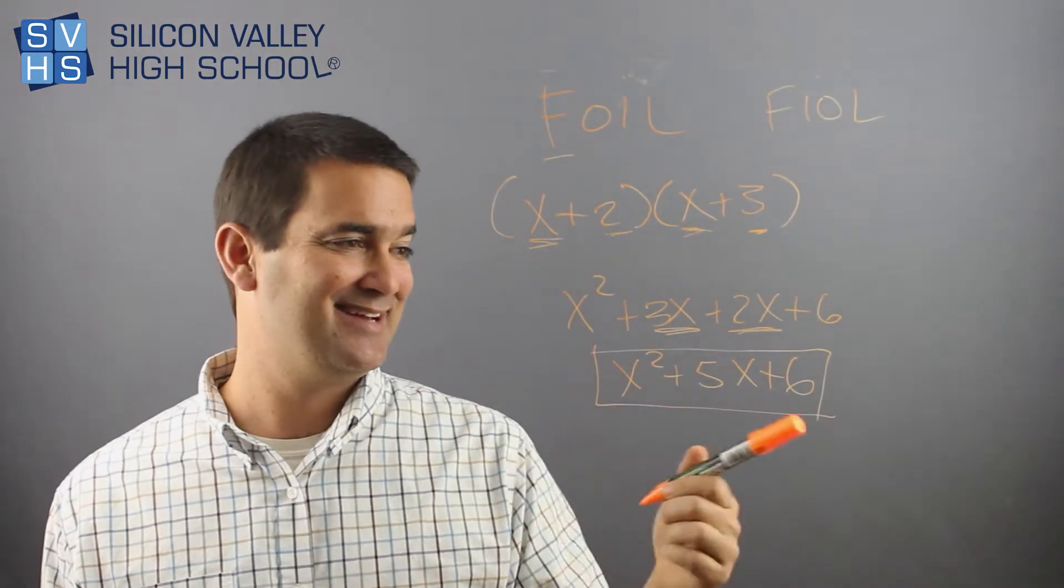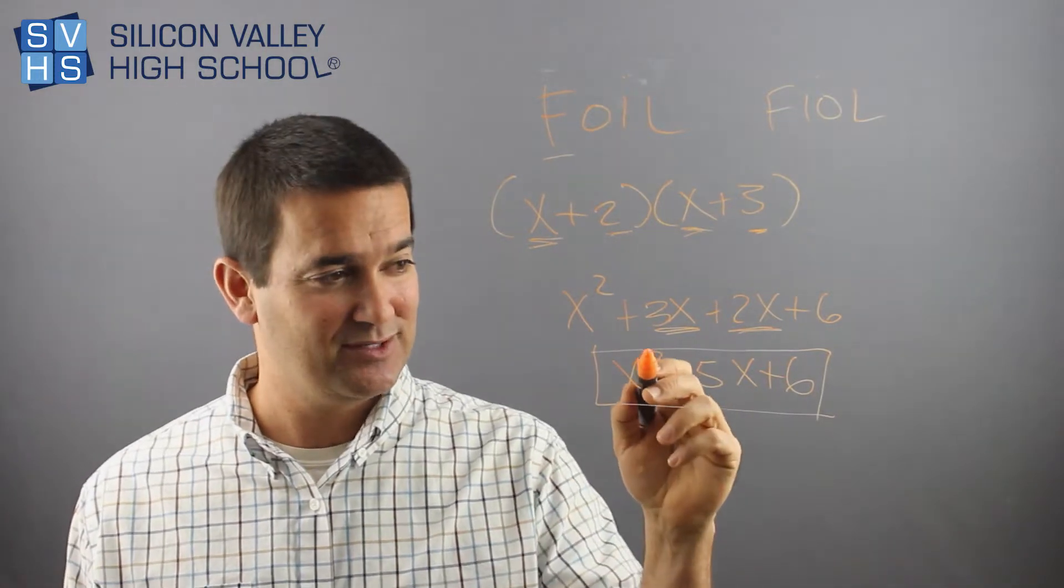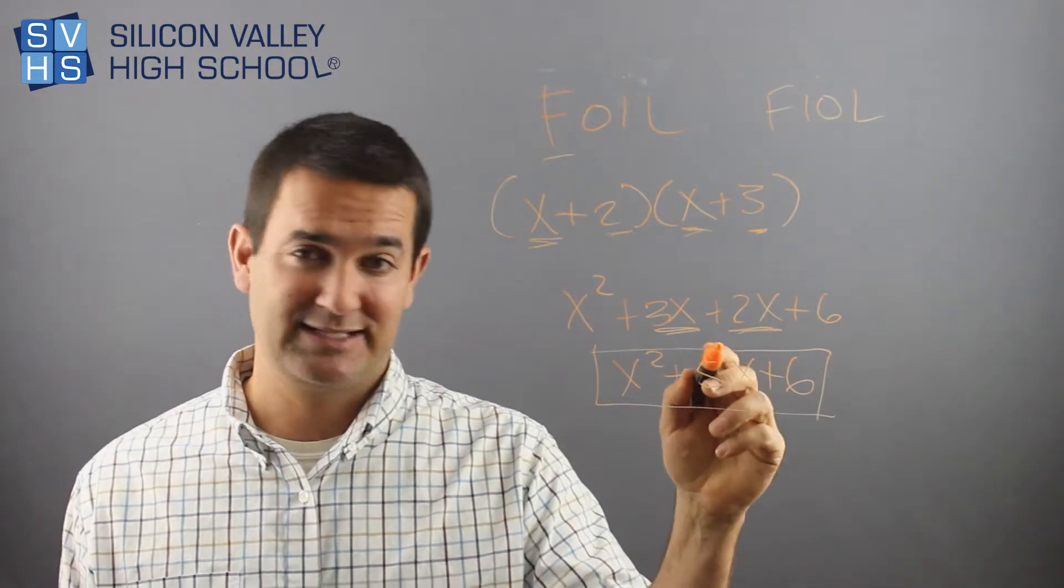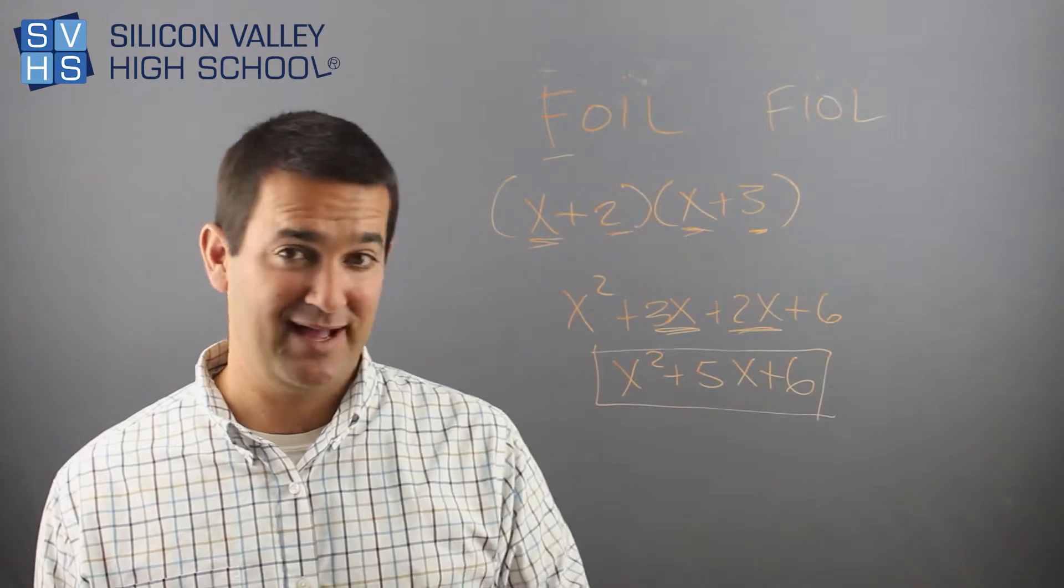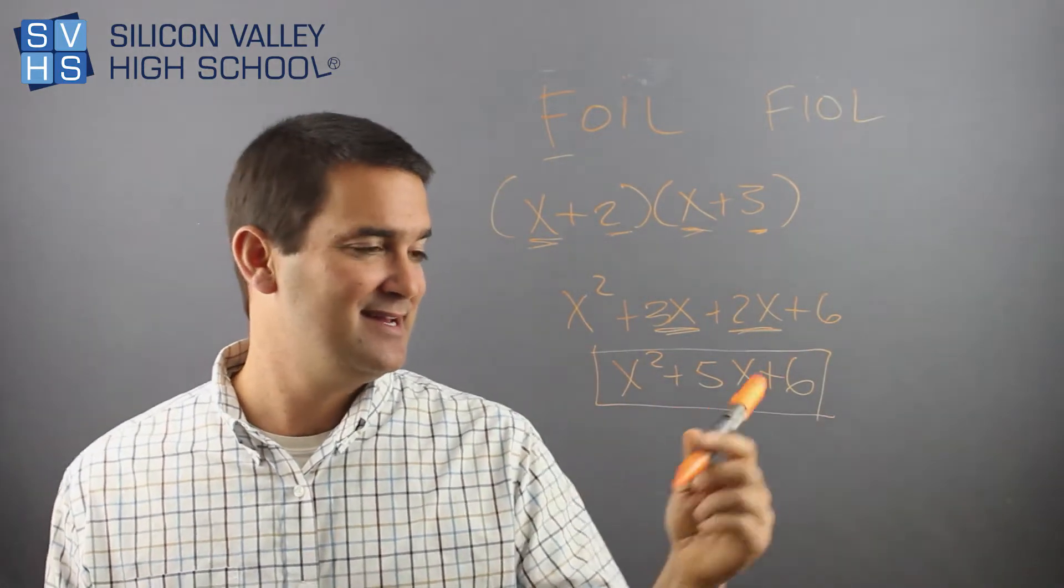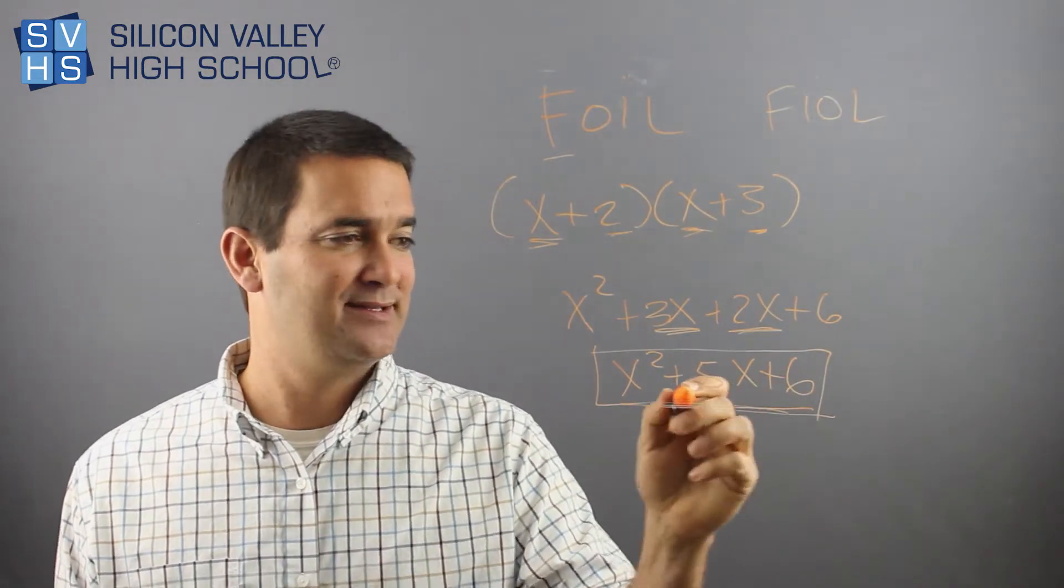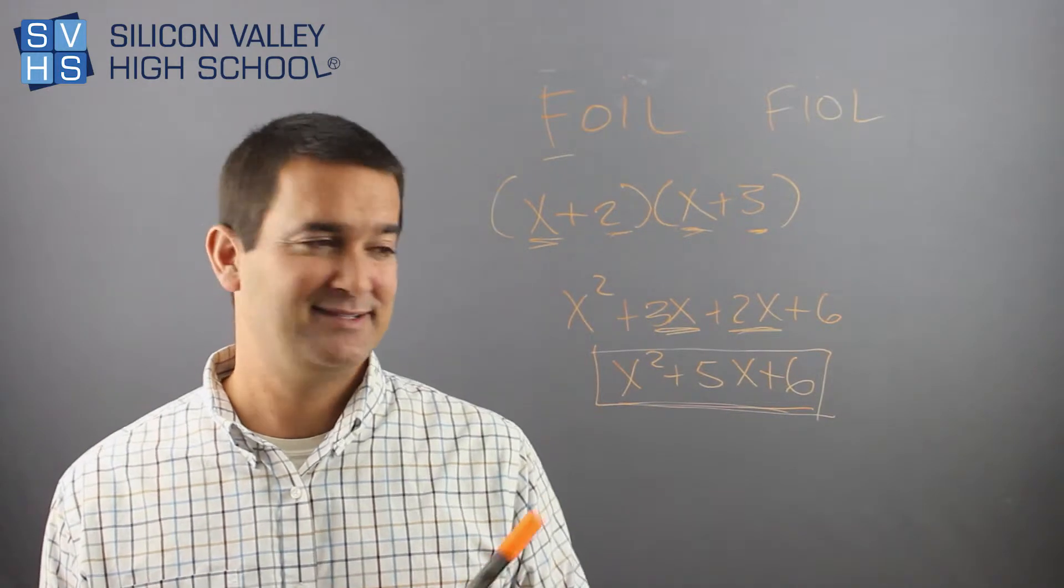But FOIL is the way they do it, and it does come out in the right order, because you do want the largest exponent, and the next exponent, and then no exponent for X. So the order is correct. And as long as you add the terms in the middle, you're going to get the right answer.